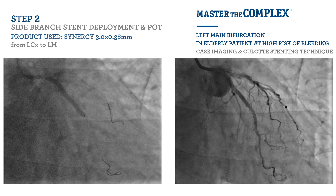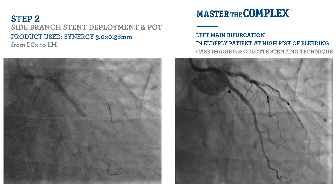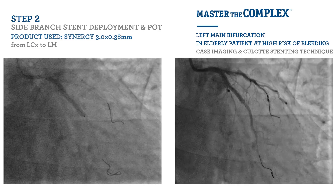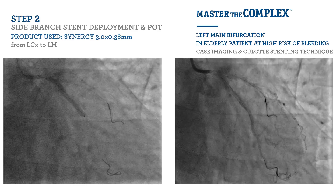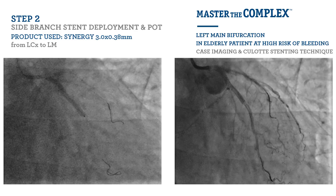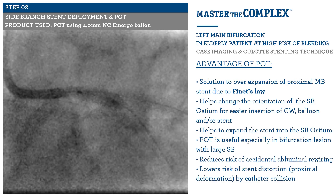The second step in the CLOT technique is to deploy a stent within the side branch back into the left main stem. Here we chose to use the Synergy 3x38 mm drug-eluting stent extending from the obtuse marginal back all the way into the left main stem. We chose the Synergy stent as it has excellent visualisation from its platinum-chromium alloy, it has thin struts, there is a bioabsorbable polymer which will allow early healing, and it has excellent over-expansion capabilities. After deploying the side branch stent, we perform a proximal optimisation using a 4 mm non-compliant eMERGE balloon within the left main stem to ensure that the stent struts are fully expanded.